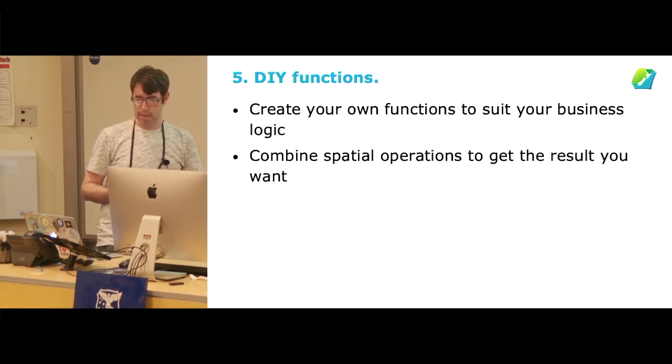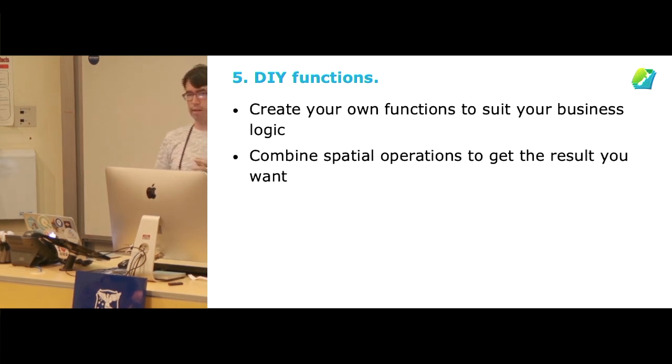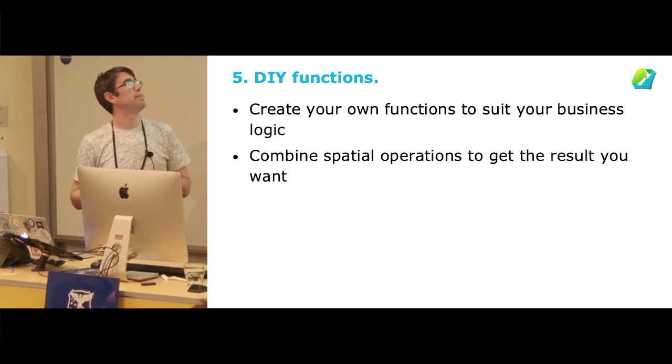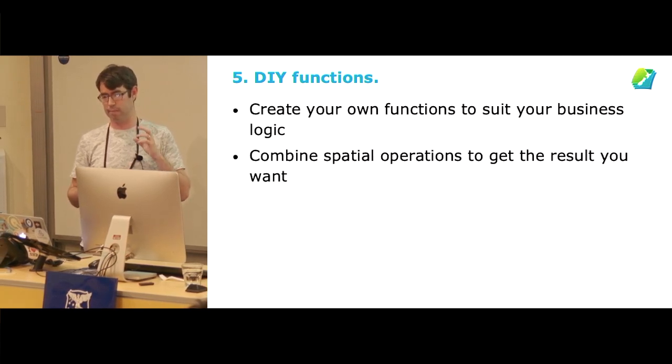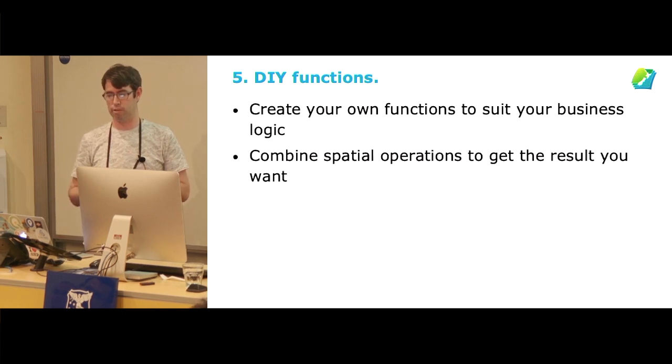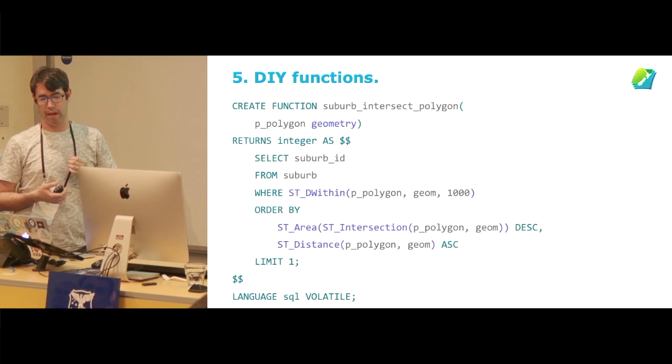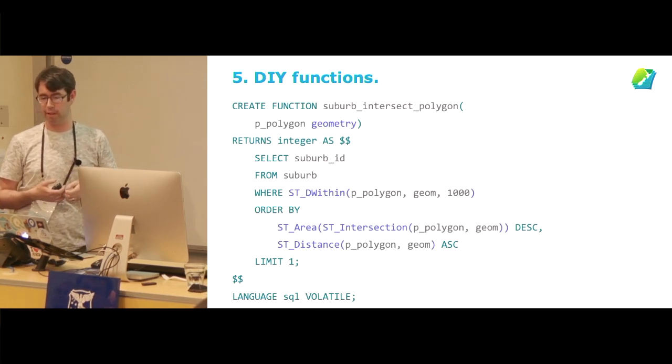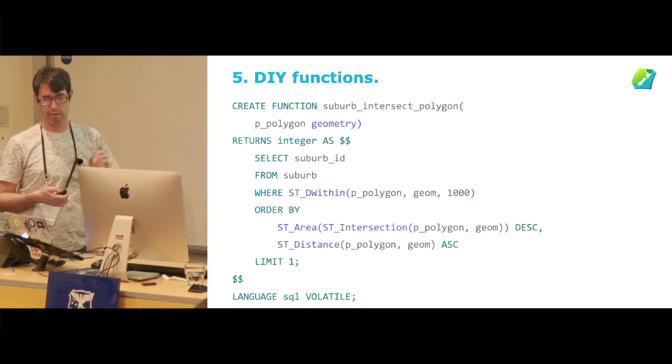We also obviously make our own functions that have our business logic and store those in the database. Combining the spatial operations from PostGIS to get the result that we want to get for the task at hand. And in many cases, we can find similar tasks that we can reuse one function over and over again for different purposes. This is pretty heavy in terms of code, but basically, if we want to find out what suburb intersects a polygon, then we've got some sort of business rules around how that works. I'll just run through it step by step.